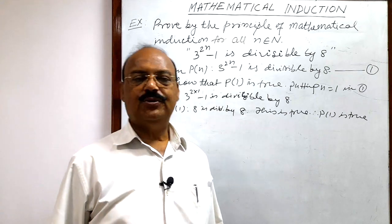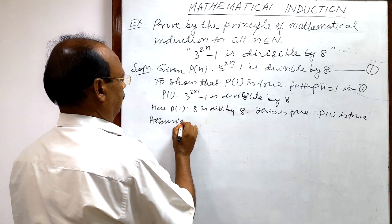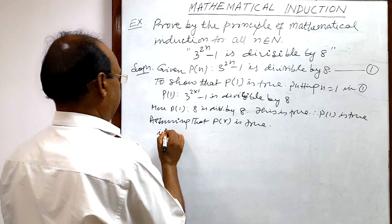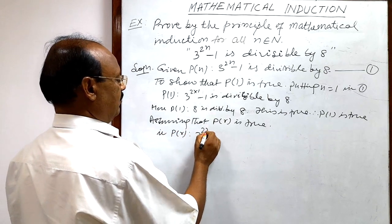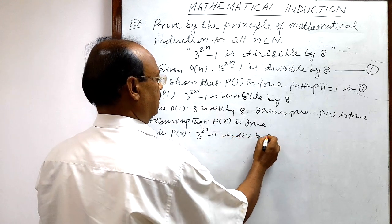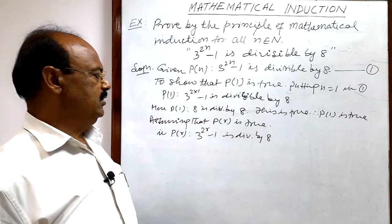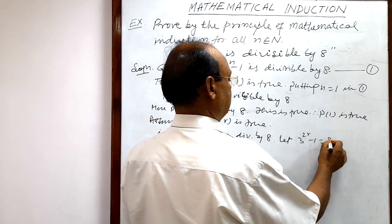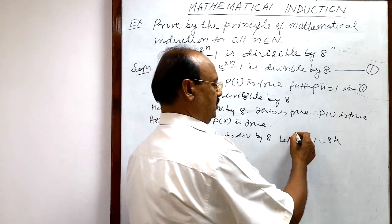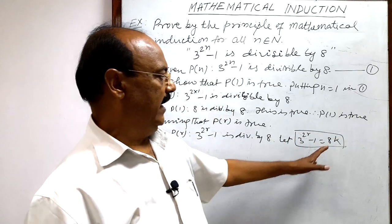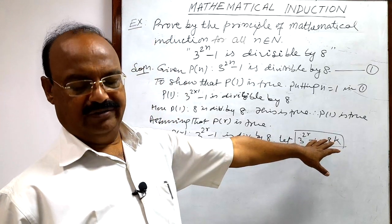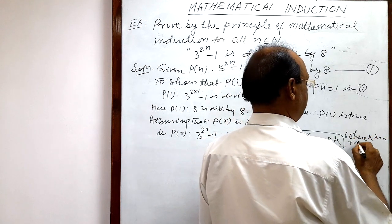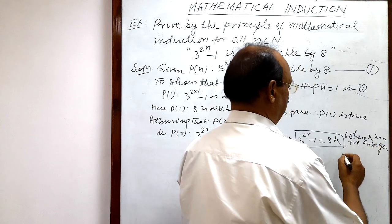Second step: assume that P(r) is true. That is, P(r): 3 to the power 2r minus 1 is divisible by 8. Since 3 to the power 2r minus 1 is divisible by 8, we can write: let 3 to the power 2r minus 1 equal 8k, where k is a positive integer. Let us call this relation number 2.